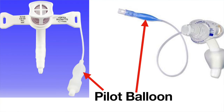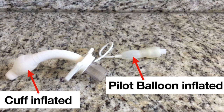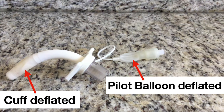At the end of the pilot line or inflation line, there is a small balloon-like structure. This is called the pilot balloon. If the pilot balloon is inflated, this means the cuff on the tracheostomy tube is inflated. If the pilot balloon is deflated, this means the cuff on the tracheostomy tube is deflated.